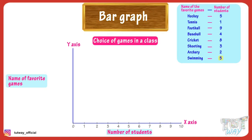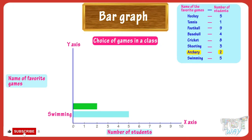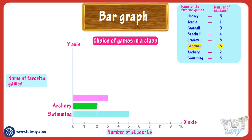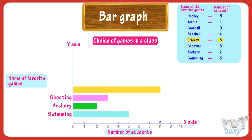It's given that five students like swimming the most, so make a rectangular bar on the y-axis up to the mark of 5 and label it with swimming. It's given that two students like archery the most, so make a rectangular bar up to the mark of 3 and label it with archery. It's given that three students like shooting the most, so make a rectangular bar up to the mark of 3 and label it with shooting. It's given that eight students like cricket the most, so make a rectangular bar up to the mark of 8 and label it with cricket.